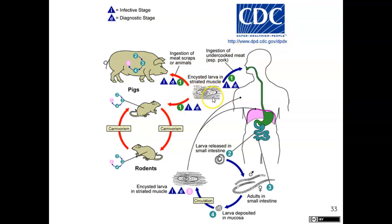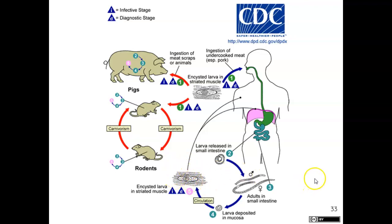Here is the CDC life cycle. We have the encysted larva — say we eat that undercooked meat. The larva are released in the small intestines, and male and female forms can reproduce there. They give birth to live young. The larvae produced can then move into the bloodstream and encyst in different areas of the body, causing pain, muscle damage, and all kinds of problems.